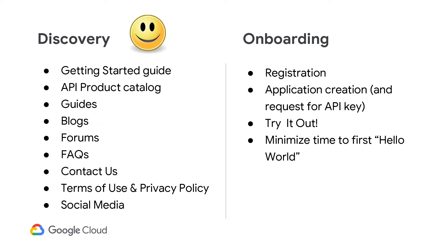Make it easy for developers to get online by streamlining the registration process and removing unnecessary obstacles. You can make registration approval automatic — say for internal trusted developers — or manual, perhaps for external developers that aren't known to the company. App developers will need to create an application and obtain an API key to authorize access to the API product. Like registration, you can make the approval automatic or manual, and this can be set at the API product level.